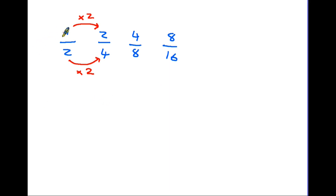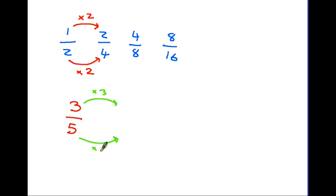This gives us the rule for finding equivalent fractions: if you multiply the top and the bottom numbers by the same number, you will find another equivalent. For example, with the fraction three over five, I'll multiply the top and the bottom by three. Three times three is nine and five times three is fifteen. Therefore three fifths and nine fifteenths are equivalent fractions.